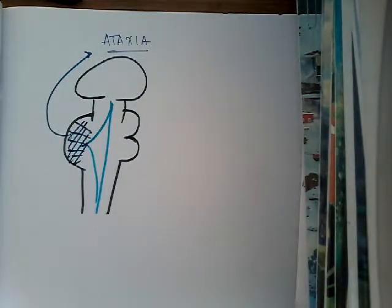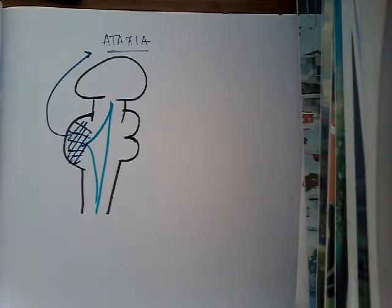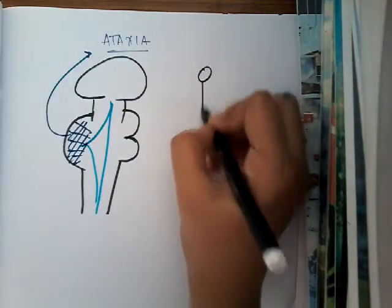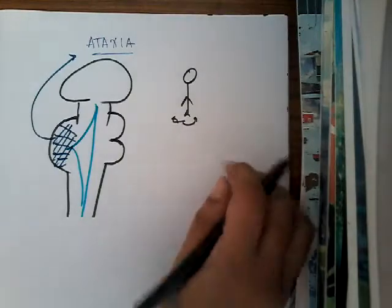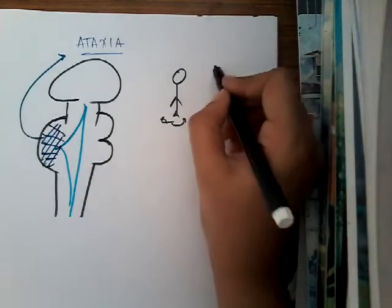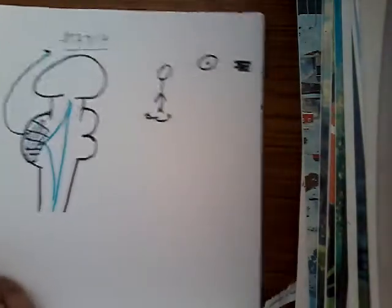The Cerebellum is the main center for balance, for balancing, for knowing position sense — everything is through Cerebellum. So whenever there is Cerebellar Disorders, it can cause gait imbalances. He is not able to maintain his gait properly. It can cause visual blurring.